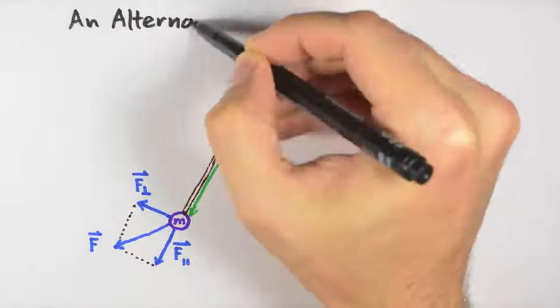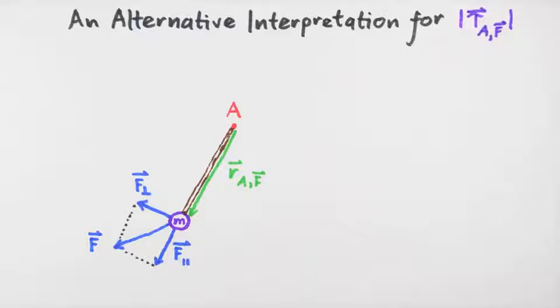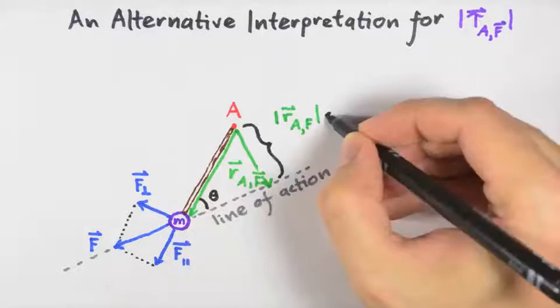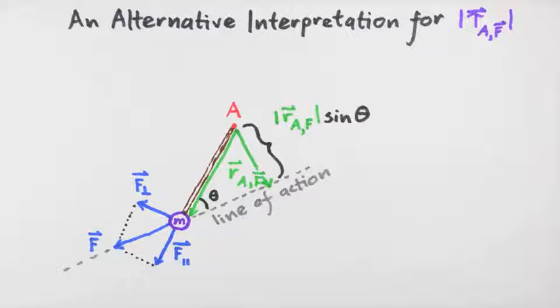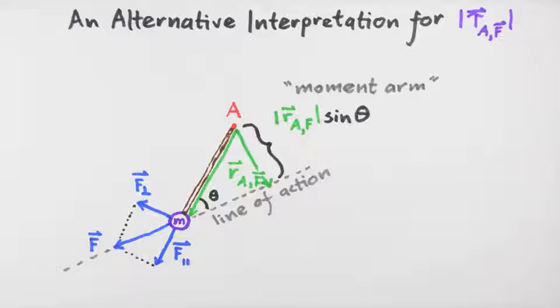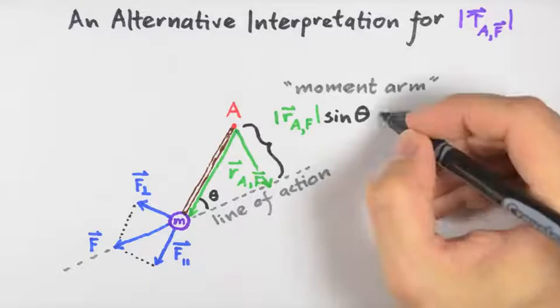This suggests an alternative interpretation for the torque magnitude. Imagine drawing a line parallel to F passing through the point where F is applied to our system. This line is called the line of action. The distance of closest approach of the line of action to the axis—or in other words, the shortest distance from the line of action to the axis—is just the magnitude of r sub a F times sine theta. This length is also called the moment arm of F about the axis a. This length is symbolized by r sub perpendicular.